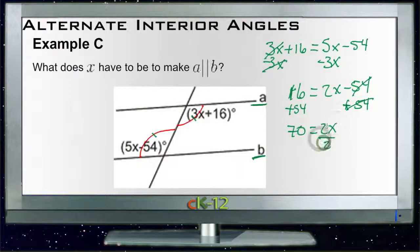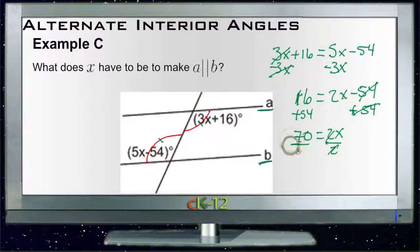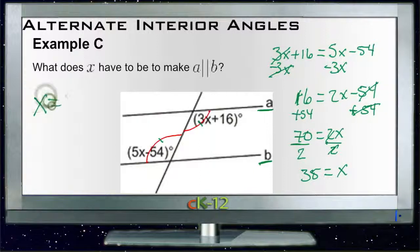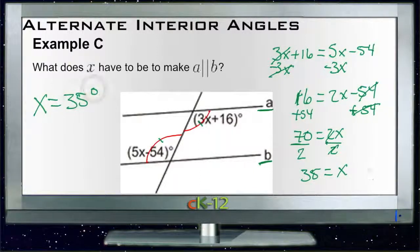Divide both sides by 2. Divide by 2. And we get 35 is equal to x. So in order for a to be parallel to b, x needs to be 35 degrees. There we go.